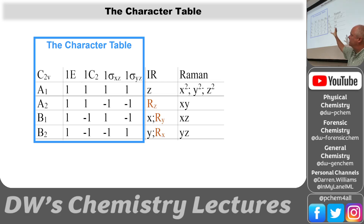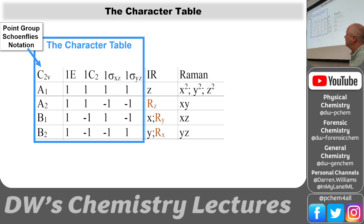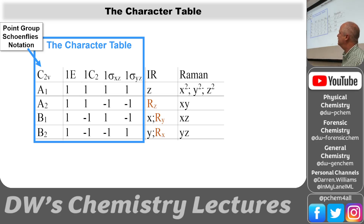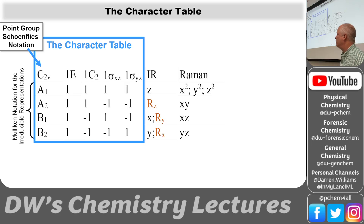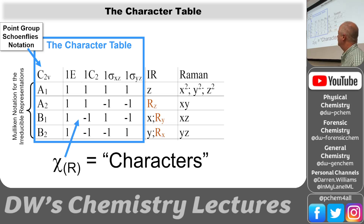Here's the character table — this left piece. It's C2V, that's for water. You see the four symmetry elements across the top. The word for this is the Schoenflies notation, after the person it's named for. This is another person's name — Mulliken — so the Mulliken notation for the irreducible representations. And then the characters are inside the character table.